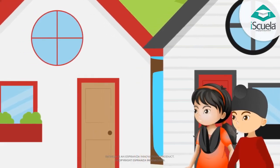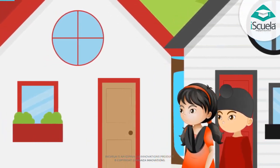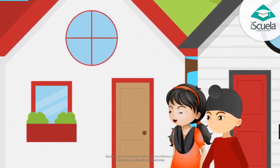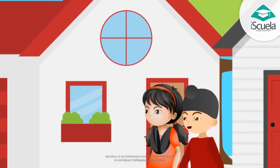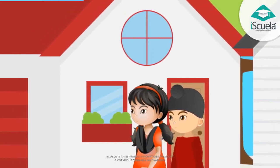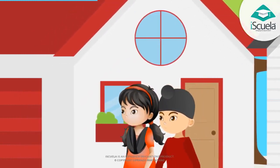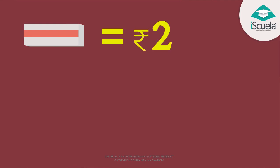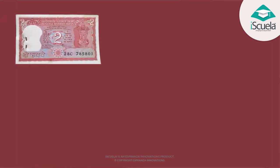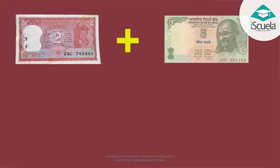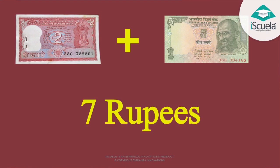Hey bro, tell me one thing. The shopkeeper gave you two notes. How did you come to know? I had added the currency note and the coin. How did you do it? Manmeet, the price of rubber was 2 rupee, and the price of pencil was 5 rupee. The currency note of 2 rupee and 5 rupee made it 7 rupee.